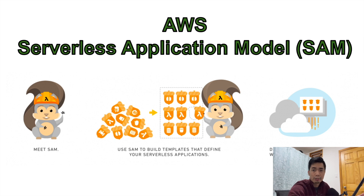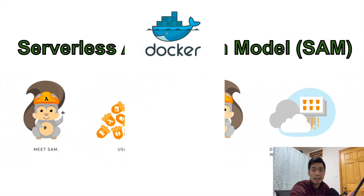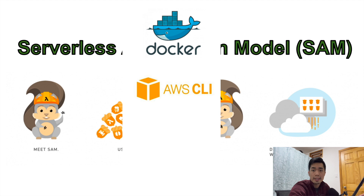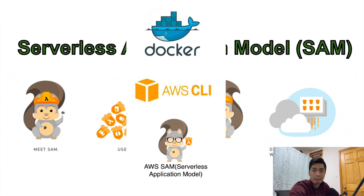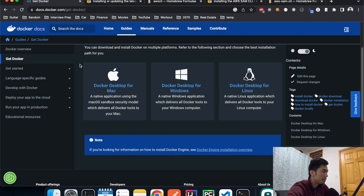Before we get to the demo, let's make sure we have the correct software installed. We need three things: the first one is Docker, because we need to use that to containerize our environment so we can test locally; the second one is the AWS CLI, because we need that to deploy our Lambda function from our local machine to the AWS account; and the third one is the SAM CLI.